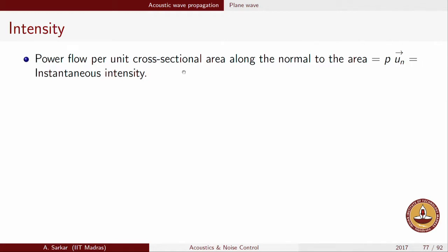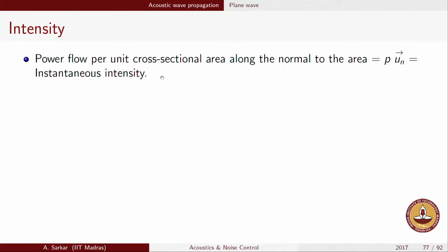We are contemplating a hypothetical area and trying to understand what power is flowing normal to that area. As discussed in the last class, the instantaneous expression is just force times velocity, and since we are talking about unit cross-sectional area, the force reduces to the acoustic pressure. So acoustic pressure times the normal velocity U_n gives the instantaneous intensity.